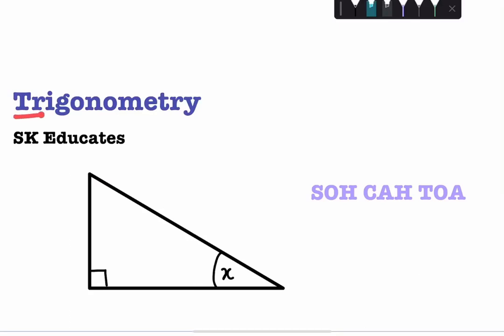In this video we're going to be speaking about trigonometry. The one thing I want you to note before we start is that we can only use this when we're dealing with right angle triangles, so triangles where one of its angles are 90 degrees.